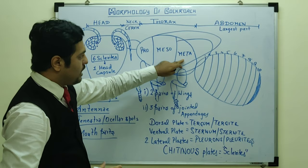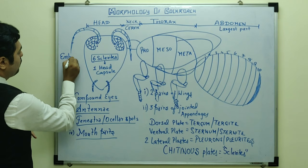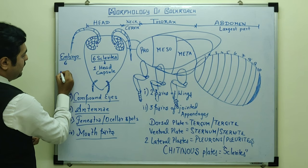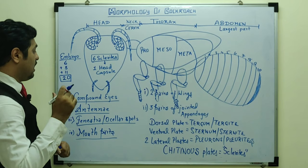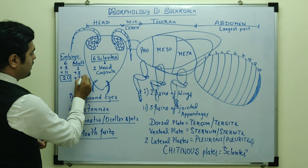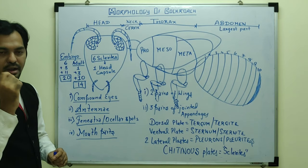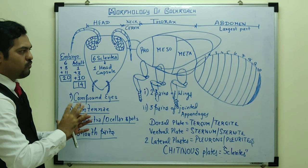In the thorax, three plates are present in both embryonic and adult stages. In the abdomen, the embryonic stage has 11 segments, but the 11th fuses with the 10th, so 10 are visible in adults. Total sclerites in the embryo: 6 in head + 3 in thorax + 11 in abdomen = 20. In adult: 1 in head + 3 in thorax + 10 in abdomen = 14 total sclerites.